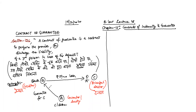A is known as the guarantor or surety for C.